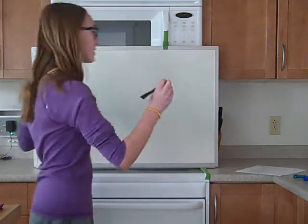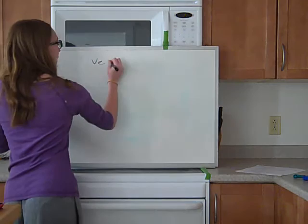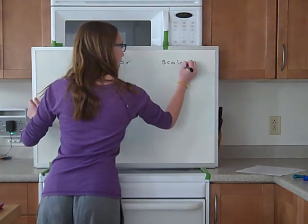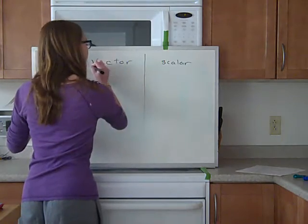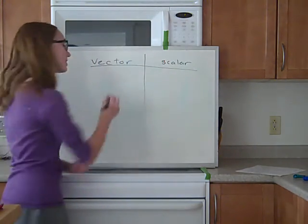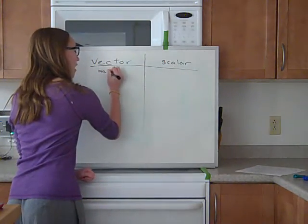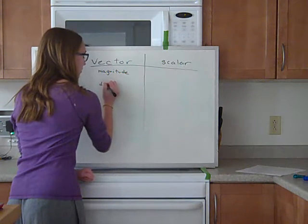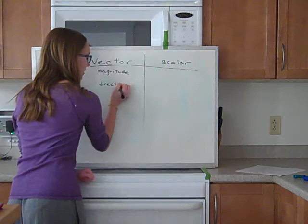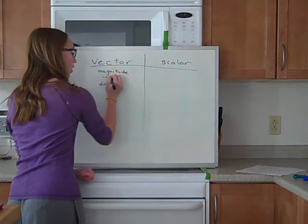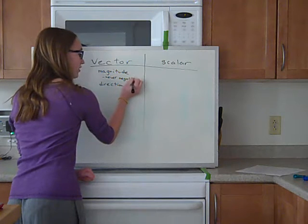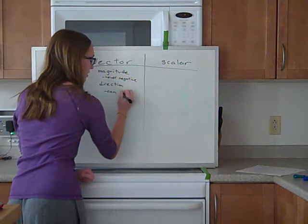First of all, what is a vector and what is a scalar? A vector is something that has magnitude and direction. Magnitude is never negative. It's always positive, but the direction can be negative, if that makes sense.